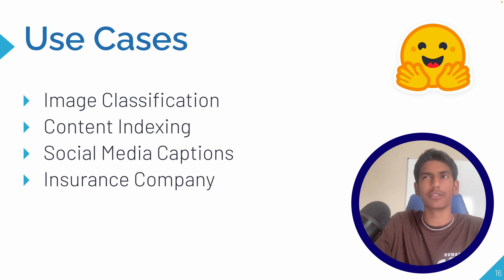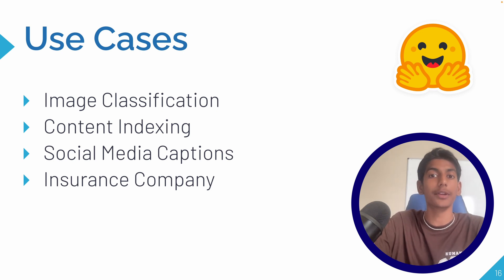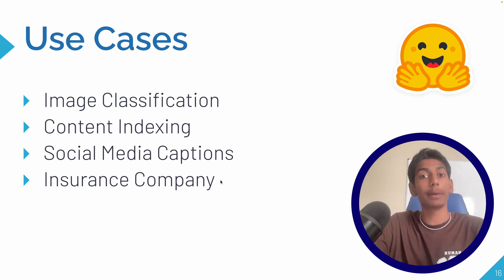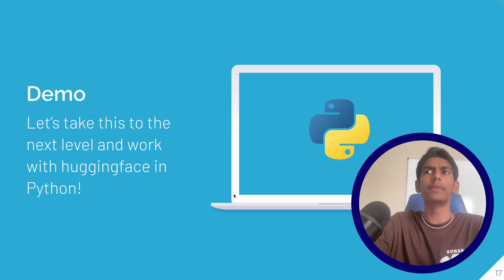You can use image captioning for regular things like social media captions or just for one-off use, but these models are especially useful in industries — like for example, insurance companies. Let's say a user has to submit an image of something that got damaged and wants to claim insurance. An AI model could take a picture of, say, a damaged living room and describe all the things inside of it very easily, much faster than a human can. Now that you know what Hugging Face is and what image captioning is, let's take it to the next level and work with Hugging Face in Python.